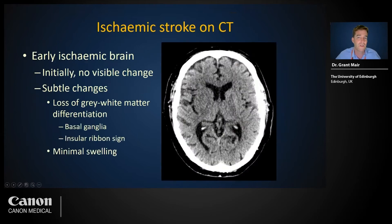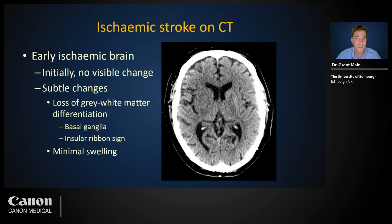When reviewing CT features for ischemic stroke, we may see nothing in the very earliest stages — up to one hour after onset, there is usually only cytotoxic edema with no net shift in water volume and thus no visible change. Over the next few hours, ionic edema develops with a net gain in excess water, causing a drop in CT attenuation and early swelling. These features are best appreciated as a loss of grey-white matter differentiation, often seen as apparent loss of cortex and/or basal ganglia swelling.